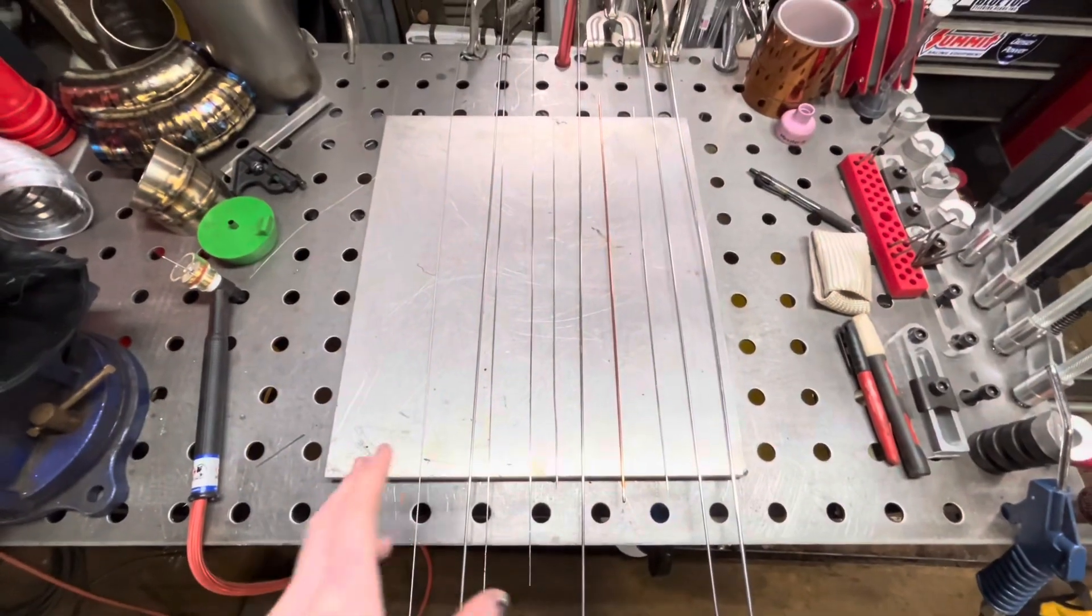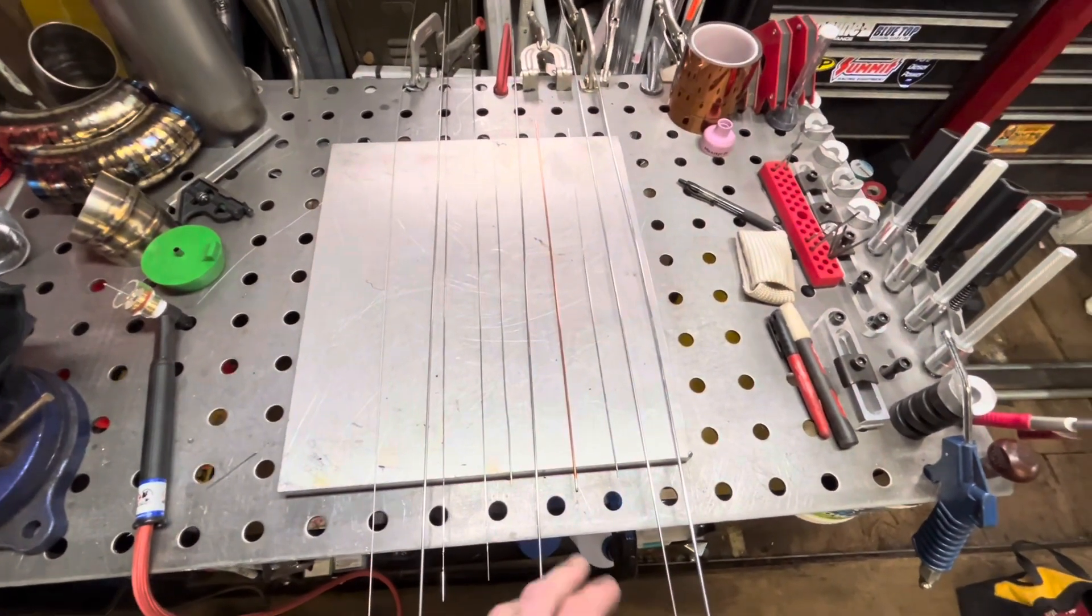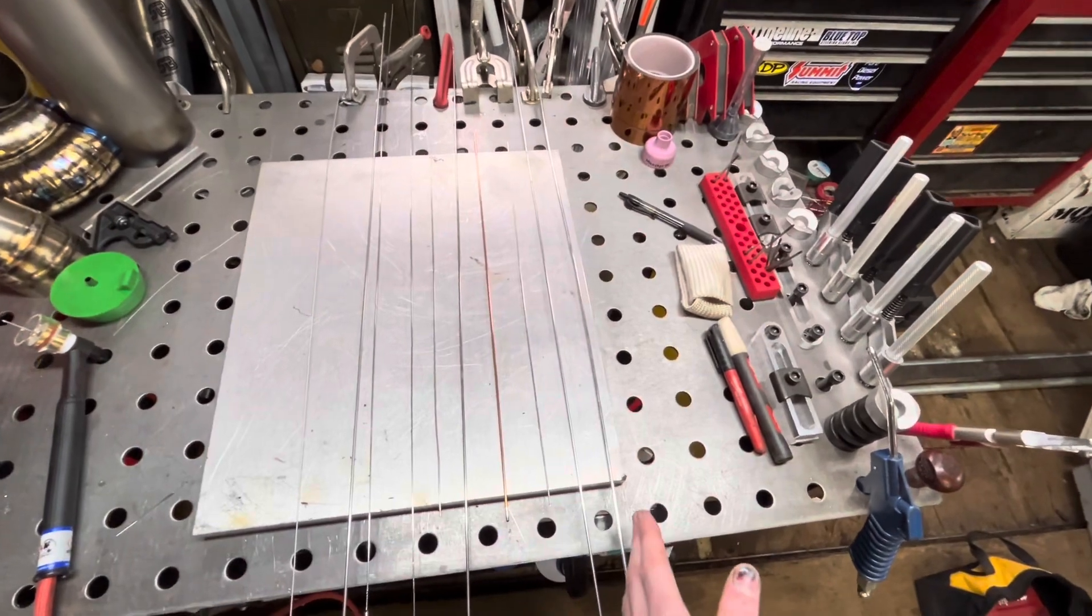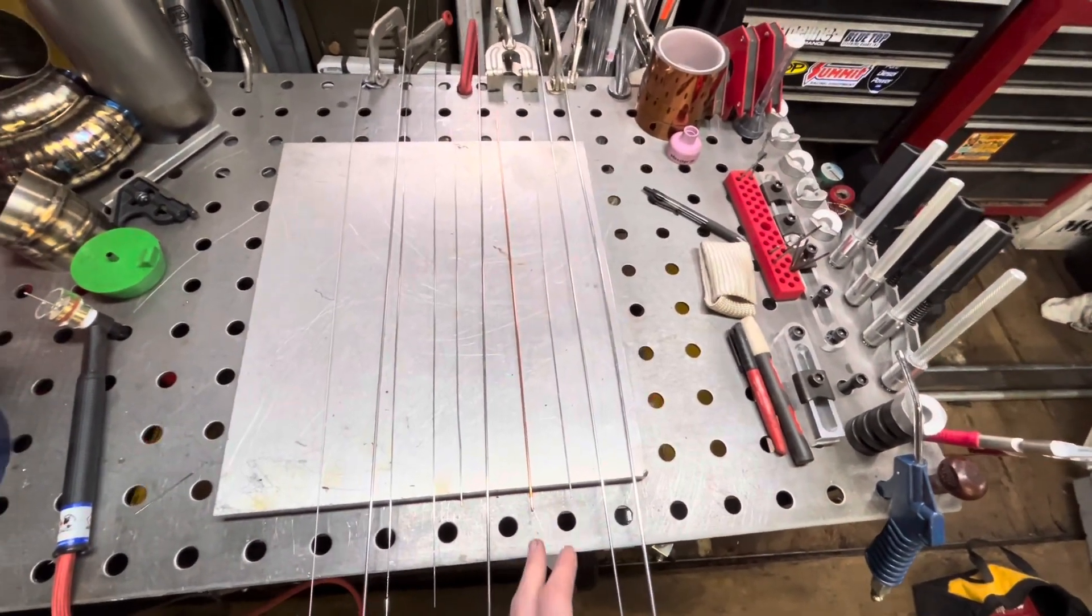All right, so you guys can see here I've got a few different rods laid out. Some of these are the same. Over here we've got aluminum rods. Here's a mild steel rod.